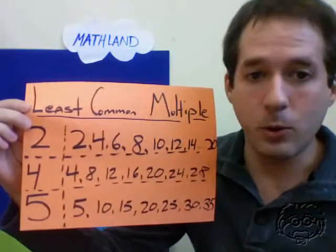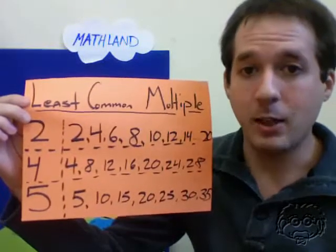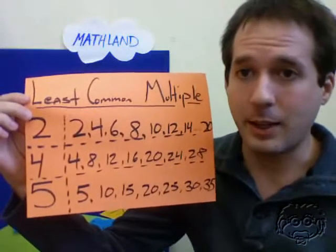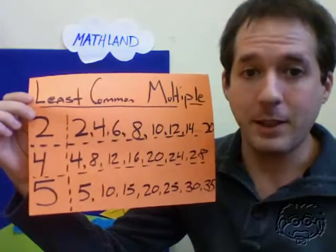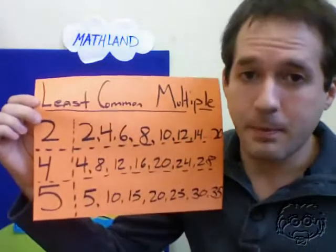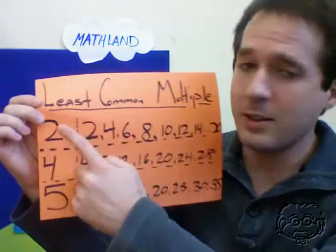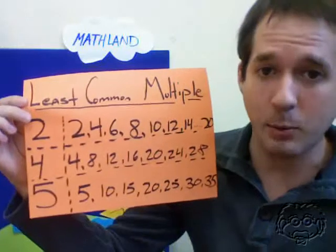4 divides into 4, 8, 12, 16, 20, 24. And 5 divides evenly into 5, 10, 15, 20, etc. Now, we found the smallest number that all three of these numbers divide into evenly, and that number was 20.